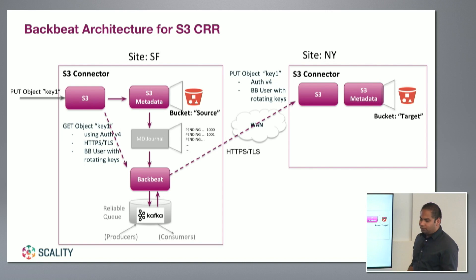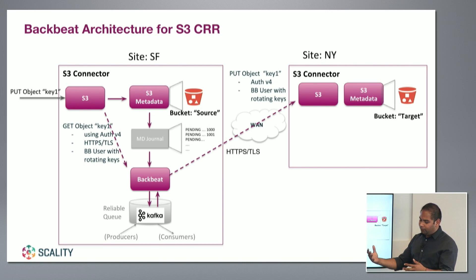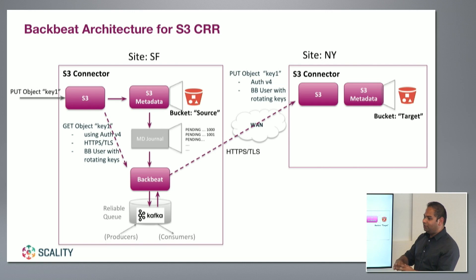BackBeat has a producers-consumers model, which basically means it writes to a queue and consumers can work in parallel — giving you a multi-threading sense of replicating different entries at the same time to the destination bucket.